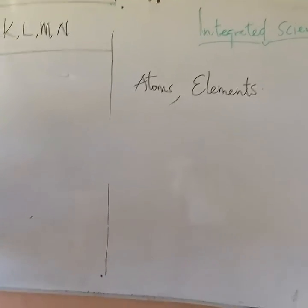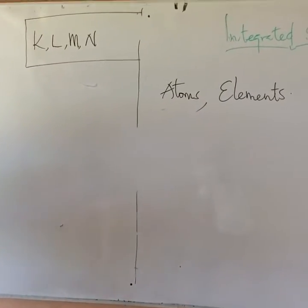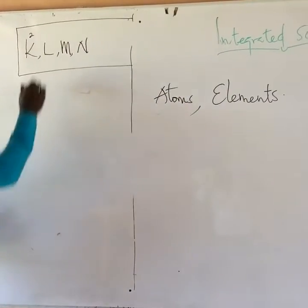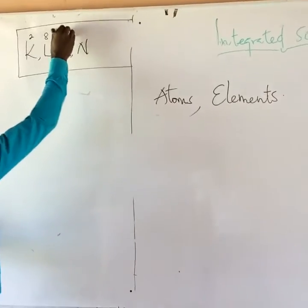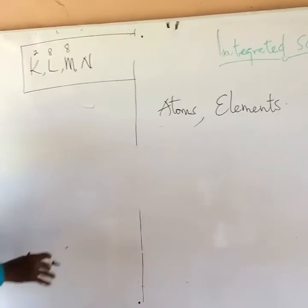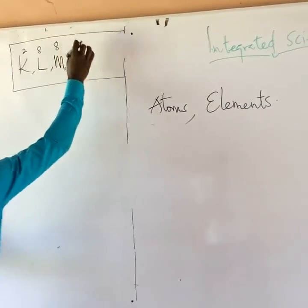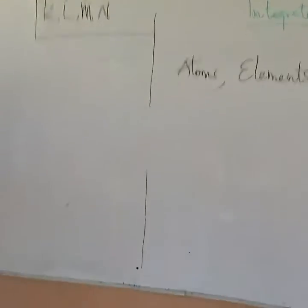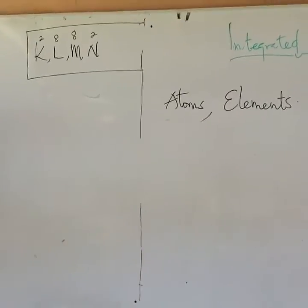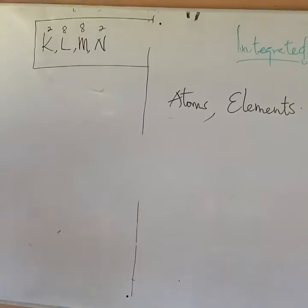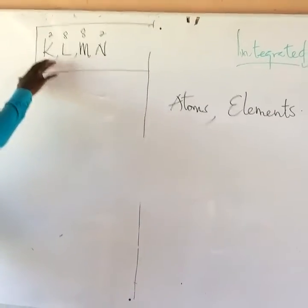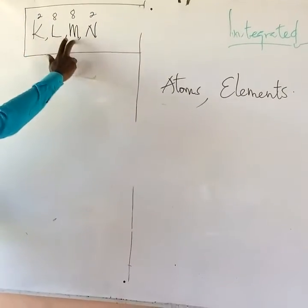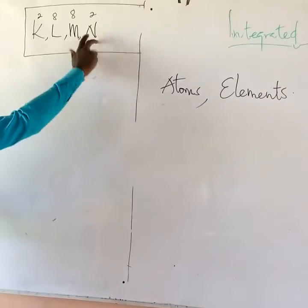The total number of electrons that the K shell should take is 2. Then for L, it should be 8. For M, it should be 8. For the first 20 elements, N should be 2. Apart from that, it can be more moving upward. But for the first 20 elements, the maximum for K is 2 electrons, L is 8, M is 8, and N is 2.